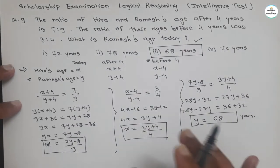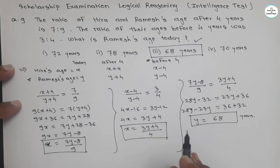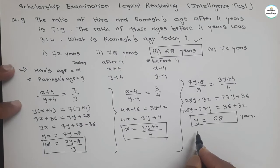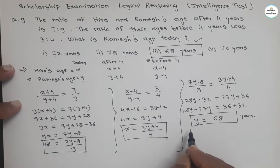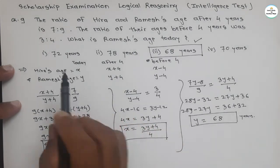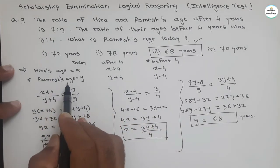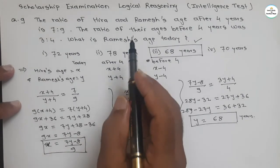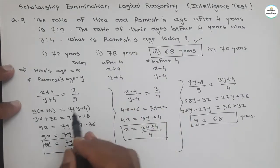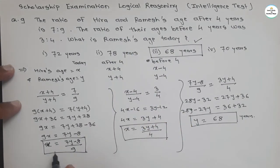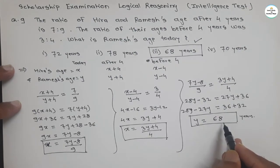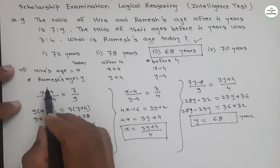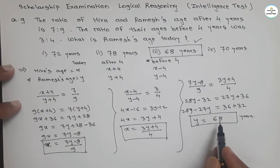The procedure is straightforward and very precise — there is no chance of any mistake. First we assumed the ages of Hera and Ramesh, then derived two equations from the given data, matched the two values of X, and calculated Y equals 68. So the age of Ramesh is 68.